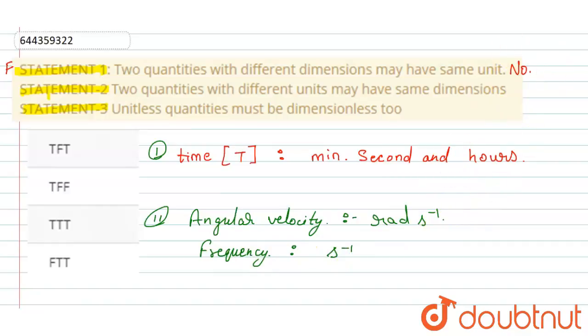And also we know that their dimensions are LT^-1 divided by L, and the dimension of frequency is 1/T. L is cancelled, so their dimension is T^-1. Both have dimension T^-1, so their dimensions are the same but their units are different. This statement is true.